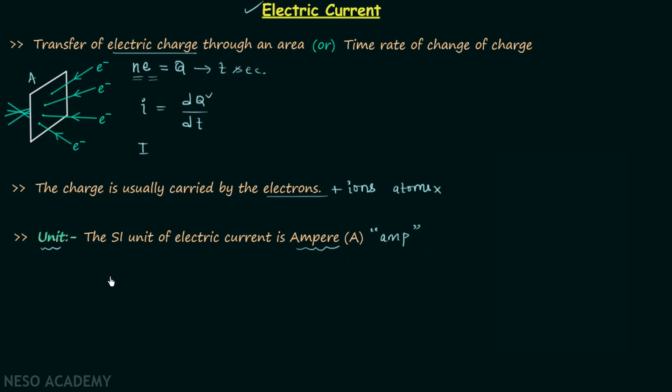Now we will define 1 ampere. When 1 Coulomb of charge passes through 1 square meter area in 1 second, the electric current is equal to 1 ampere. You can see the importance of area while defining electric current.